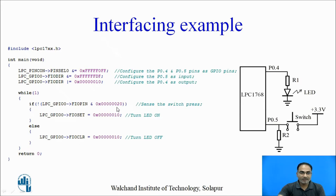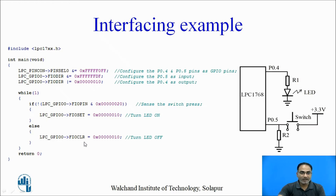The first statement checks the status of P0.5, whether the switch is pressed or not. By default the switch is not pressed, so FastIO pin ANDed with 0x20 returns 0, which is a false condition. NOT of false becomes true, so the statement FastIO set equal to 0x0010 executes, which turns the LED on. When the switch is pressed, this condition becomes true; NOT of true is false, so the else part executes. In the else part we have the FastIO clear statement, which turns off the LED.